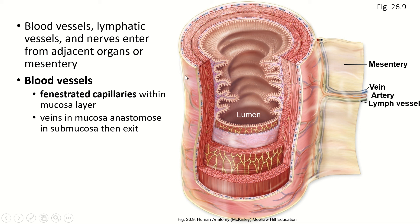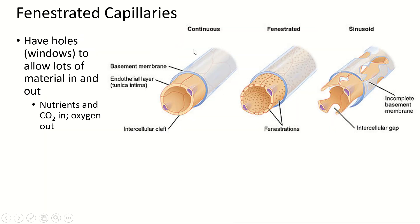In the outer areas, we have continuous capillaries — just regular blood flow. Continuous capillaries have a continuous epithelium; fenestrated have the little holes; sinusoids are the ones with the big holes. We don't have sinusoids in the digestive tract itself — we have them in the liver, which is not part of the GI tract but an accessory organ.